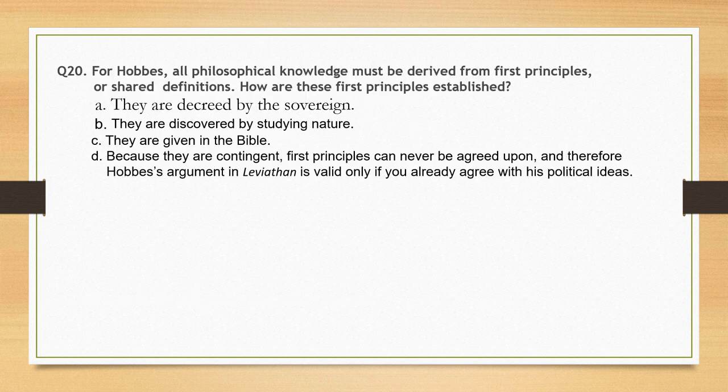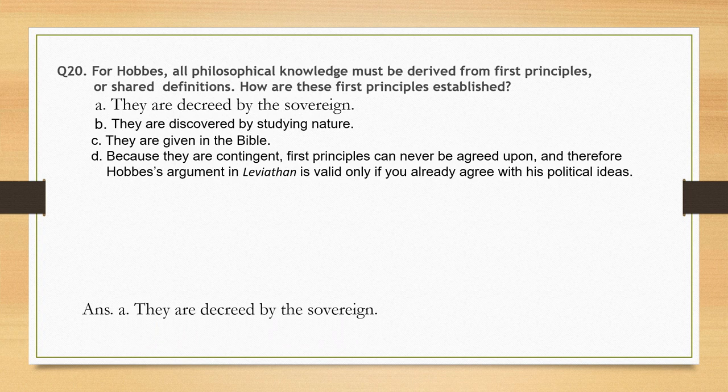For Hobbes, all philosophical knowledge must be derived from first principles or shared definitions. How are these first principles established? Options: they are decreed by the sovereign; discovered by studying nature; given in the Bible; or, because they are contingent, first principles can never be agreed upon — and therefore Hobbes' argument in Leviathan is valid only if you already agree with his political ideas. The correct option is option A: they are decreed by the sovereign.